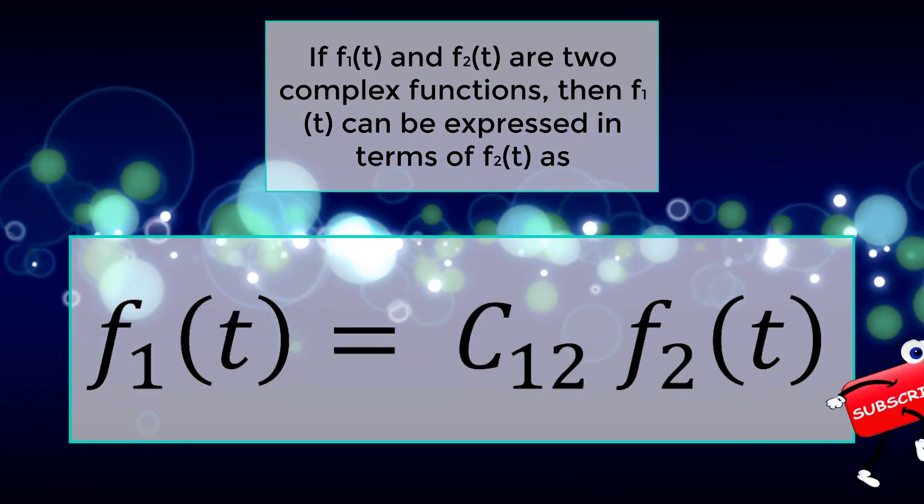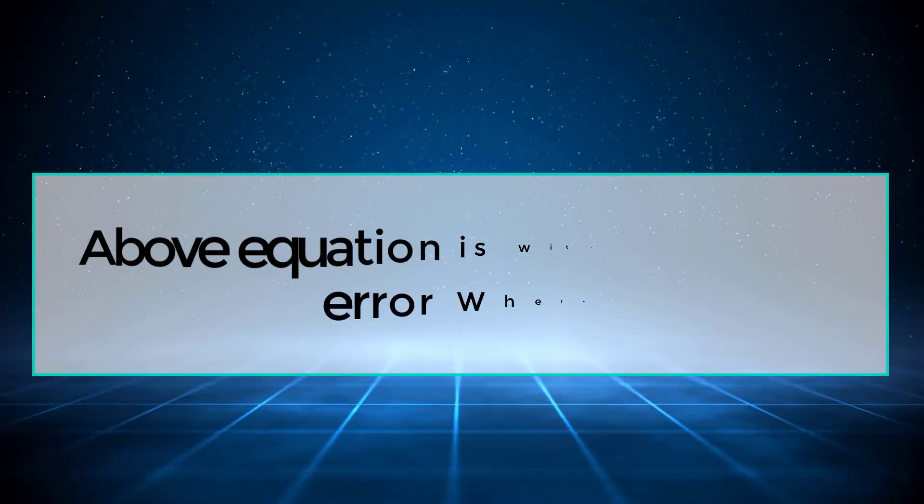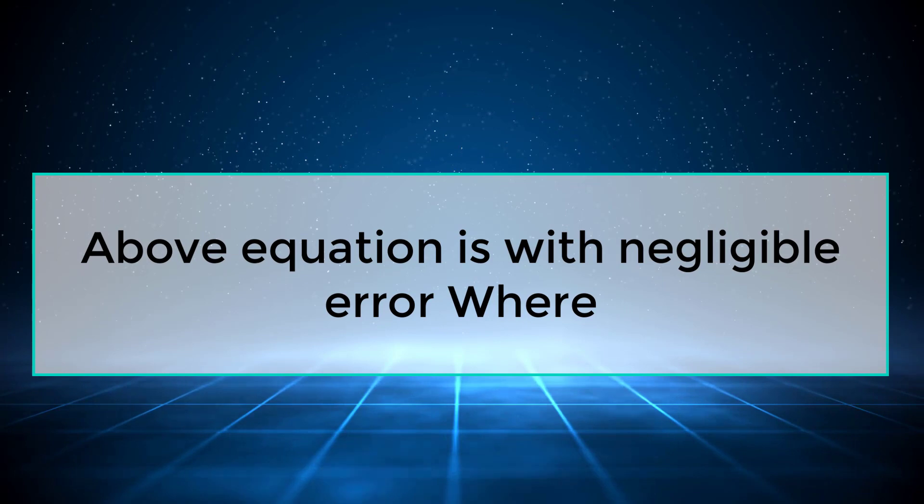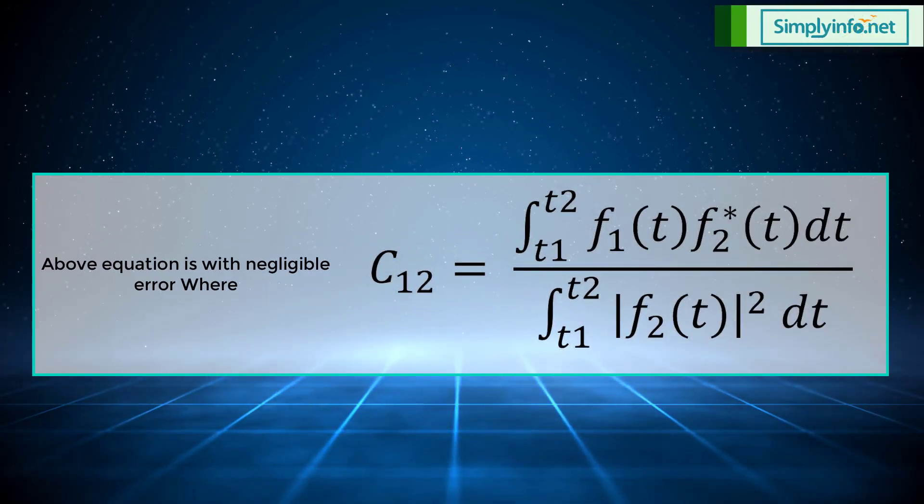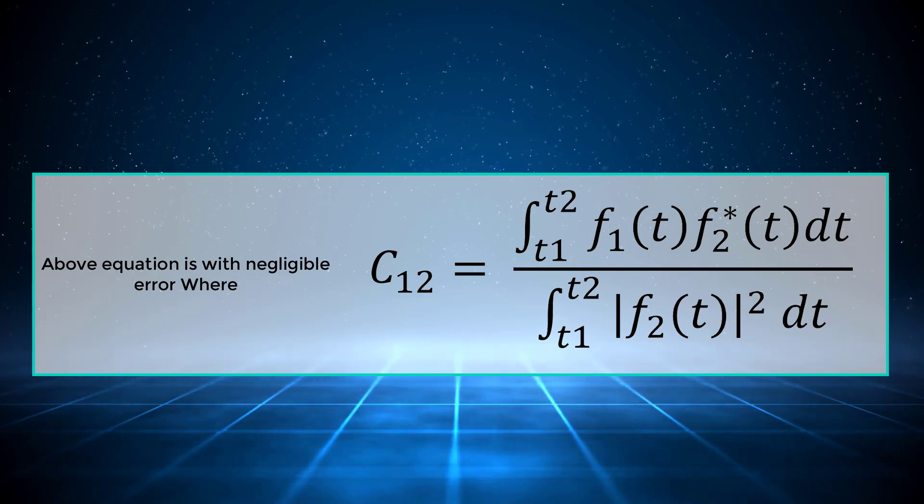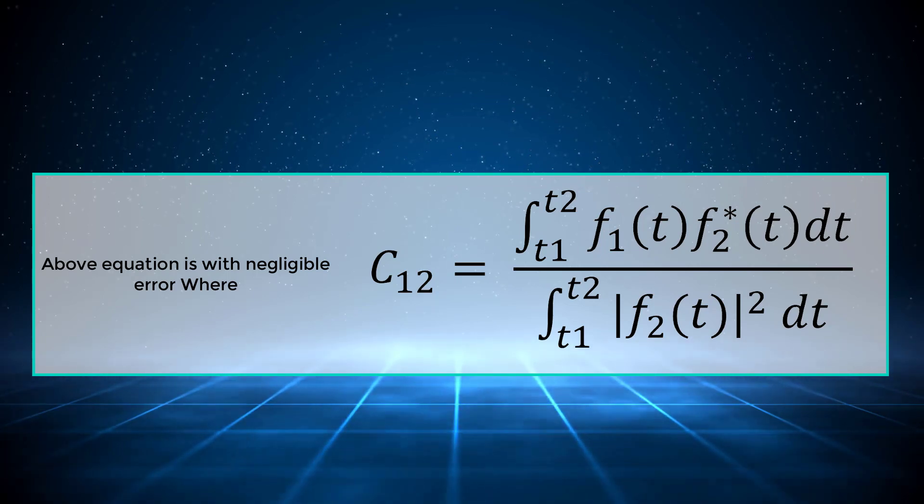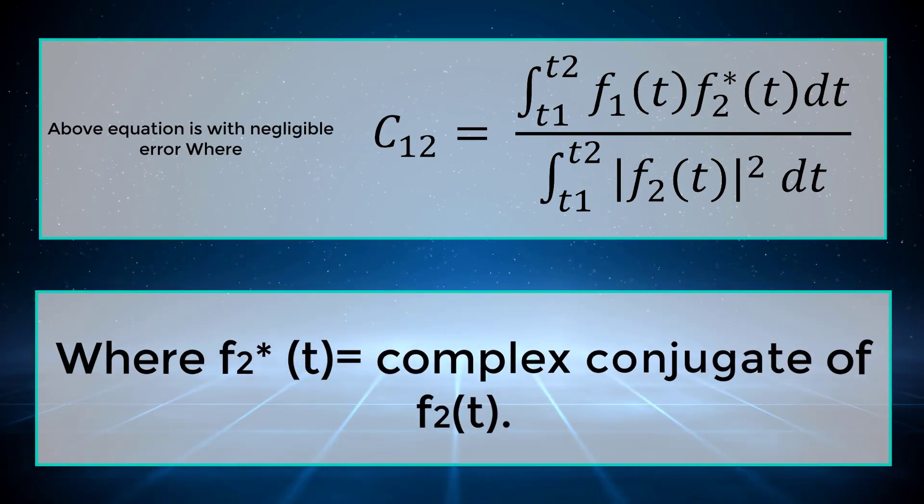f1(t) equals c12 into f2(t). The above equation is with negligible error where c12 equals the integral from t1 to t2 of f1(t) into f2 star of t dt, divided by the integral from t1 to t2 of the square of f2(t) dt, where f2 star is the complex conjugate of f2(t).